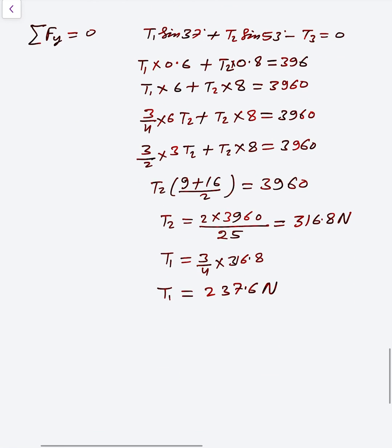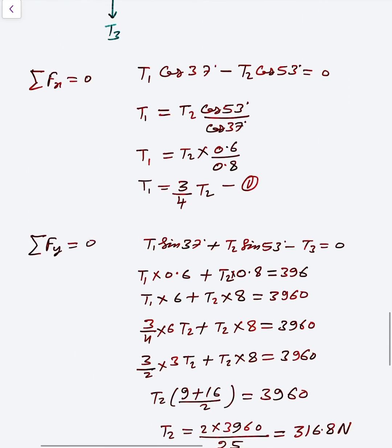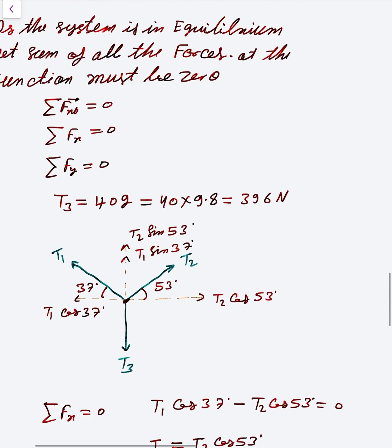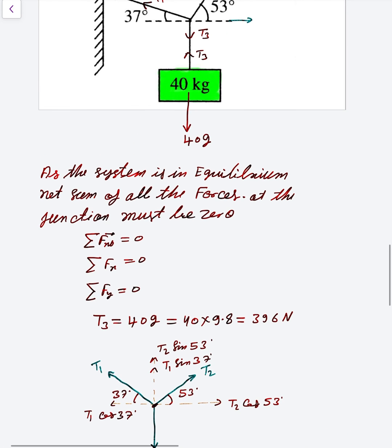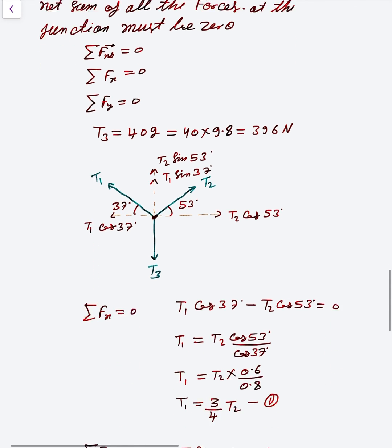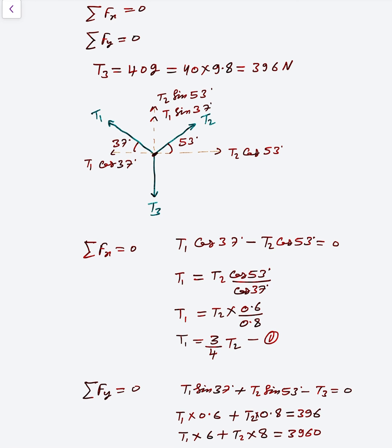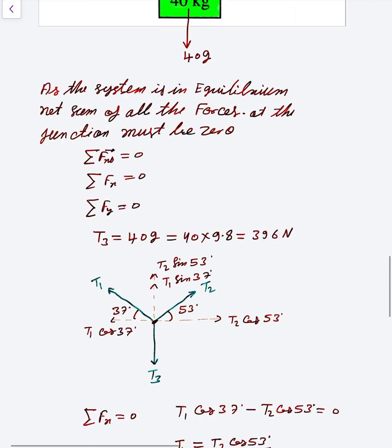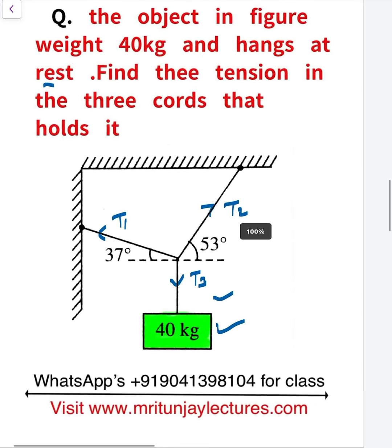So finally we got T1 is 237.6 Newtons, T2 is 316.8 Newtons, and T3 is 396 Newtons. This is the final answer. Simply make a free body diagram. After that, net force on this according to question is zero at the junction. So evaluate components of all forces, F_x sum equals zero and sum of F_y equals zero, then evaluate T1, T2, T3. If you have any doubt, comment it and I will discuss again.